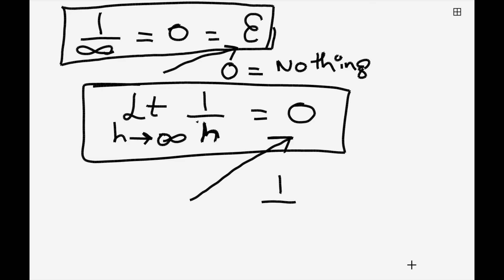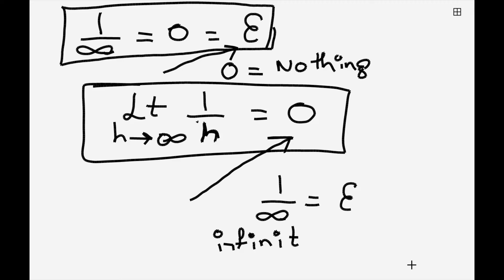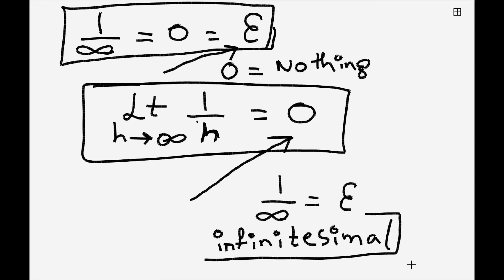In fact, one by infinity equals to a number called epsilon, which is infinitesimal. This is the infinitesimal number. We use the concept of infinitesimal in calculus, where we take the infinitesimal length like dx.